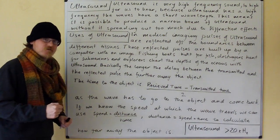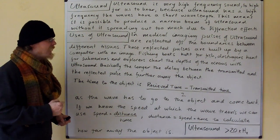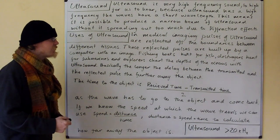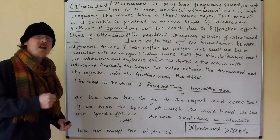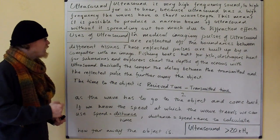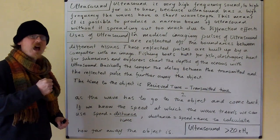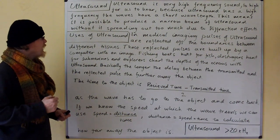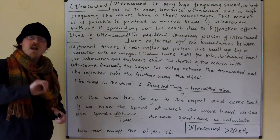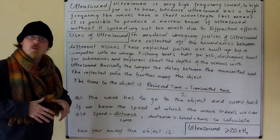Uses of ultrasound: in medical imaging, pulses of ultrasound are reflected off the boundaries between different tissues, and these reflected pulses are built up by a computer into an image. Fishing boats hunt for fish, destroyers hunt for submarines, and explorers chart the depths of the oceans with ultrasound. This reflection off different body tissues is also how an ultrasound scan is used to look at a pregnant woman's baby.